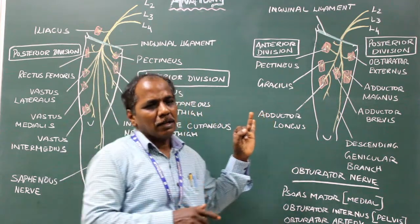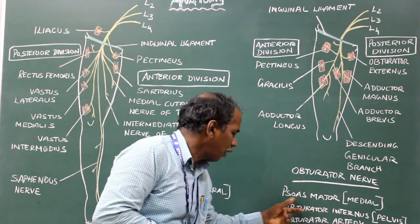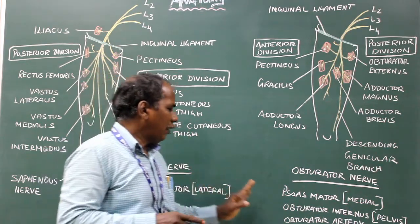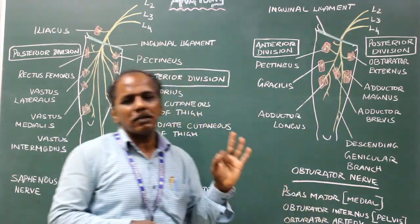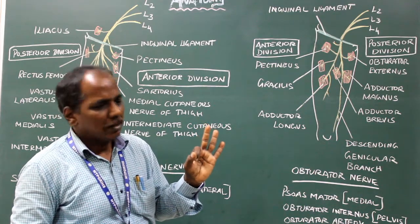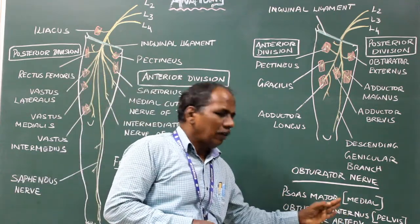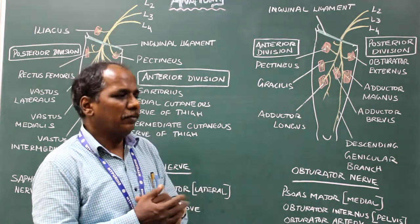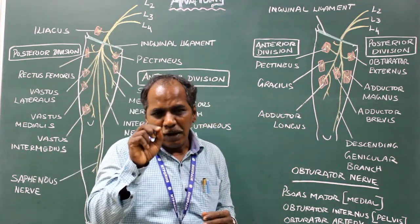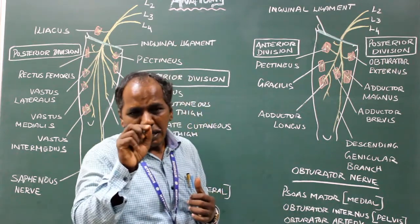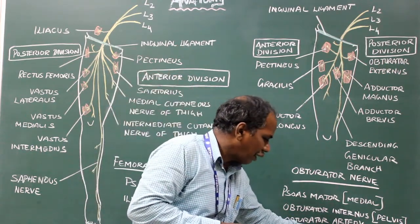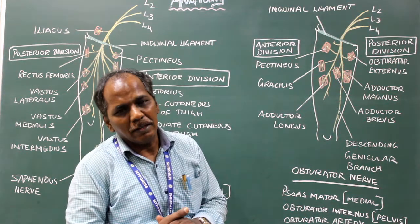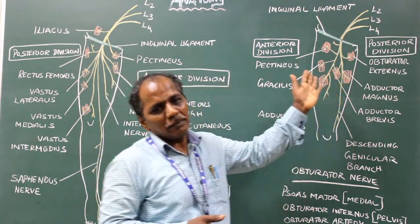In the pelvis it is related to the medial surface of the obturator internus muscle. In the case of females, in the pelvis it is related to the lateral surface of the ovary. It enters the obturator foramen, or obturator canal, along with the obturator artery, enters the thigh, and ends by supplying the medial compartment muscles of the thigh.